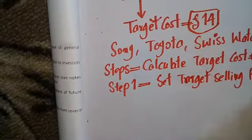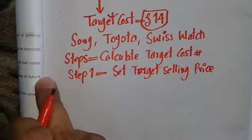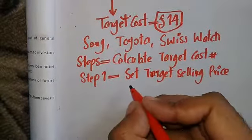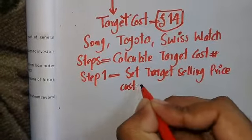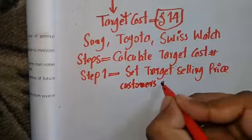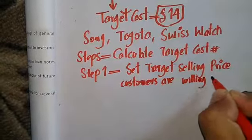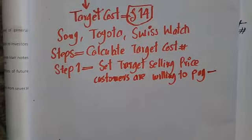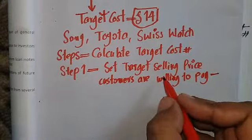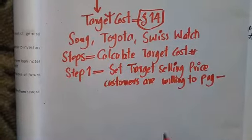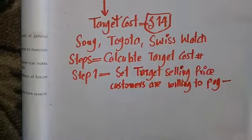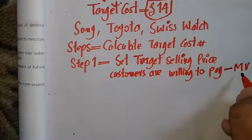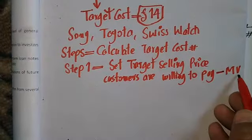We set a target selling price that is affordable for the customer — a price that customers are willing to pay and is not out of their limit. This target selling price may be, or will be, the market price or market value.